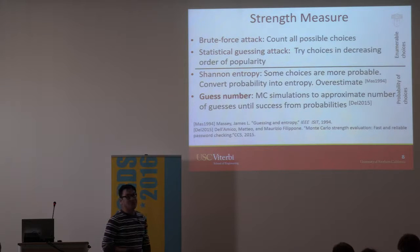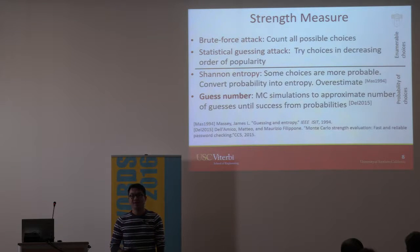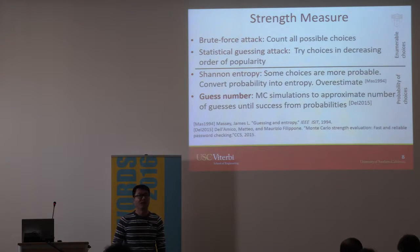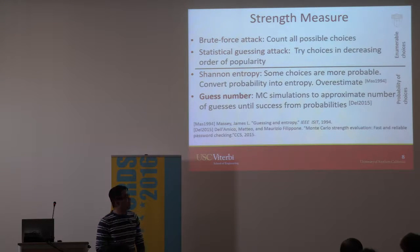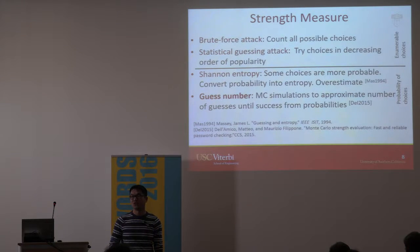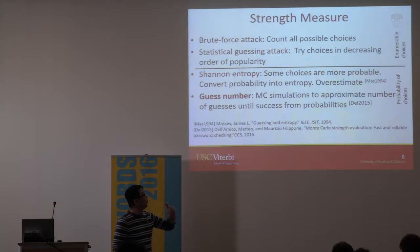The next approach is more theoretical: Shannon entropy. If you know the probability of each item and have a complete probability distribution, you can compute entropy precisely. However, Massey in 1994, in an information theory conference, showed that Shannon entropy overestimates the actual number of guesses needed for passwords and security questions. Later work also showed improvements toward a more accurate password strength measure.